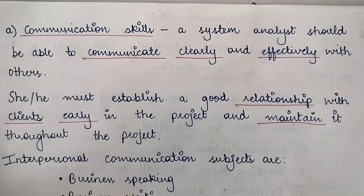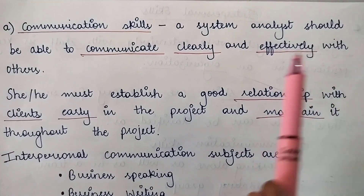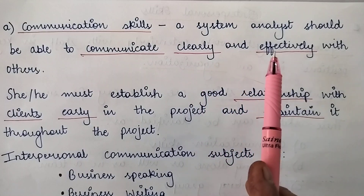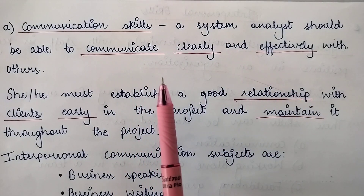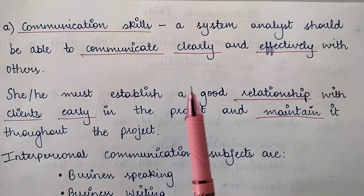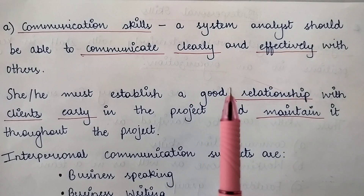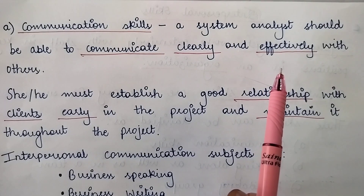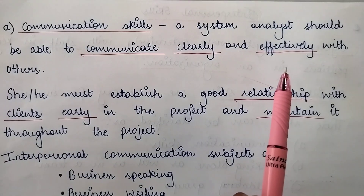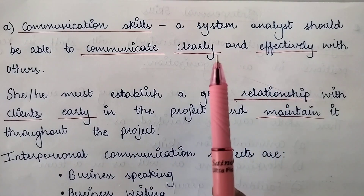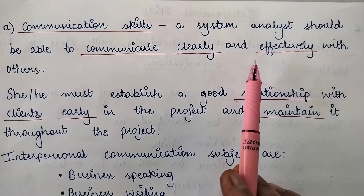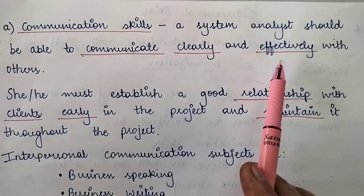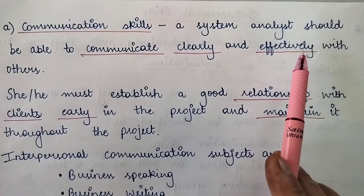First of all, we will study communication skills. A system analyst should be able to communicate clearly and effectively with others. Whatever we are communicating should be clear to the other person — there is no ambiguity in what we are saying, and the other person is convinced with it. What we are trying to say and what the other person understands should be the same.